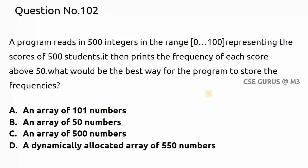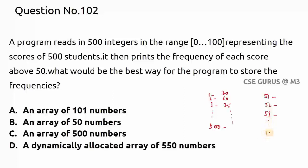There are 500 students, each with a score in the range 0 to 100. We need to store how many students got each score above 50 — that is, how many got 51, how many got 52, up to 100. So we need to store the count for scores 51 through 100.